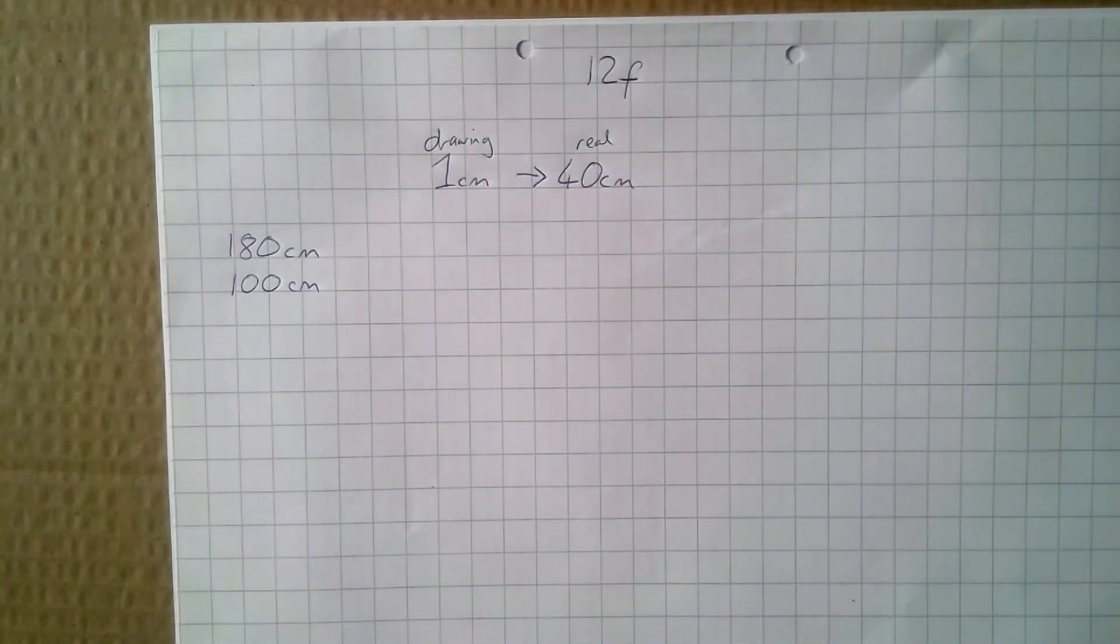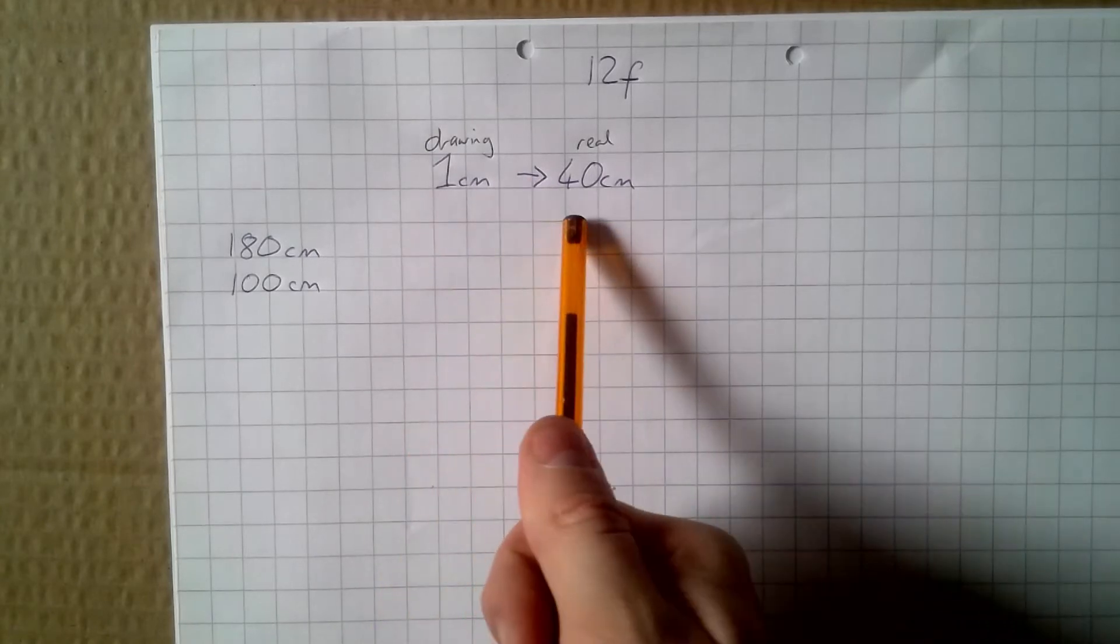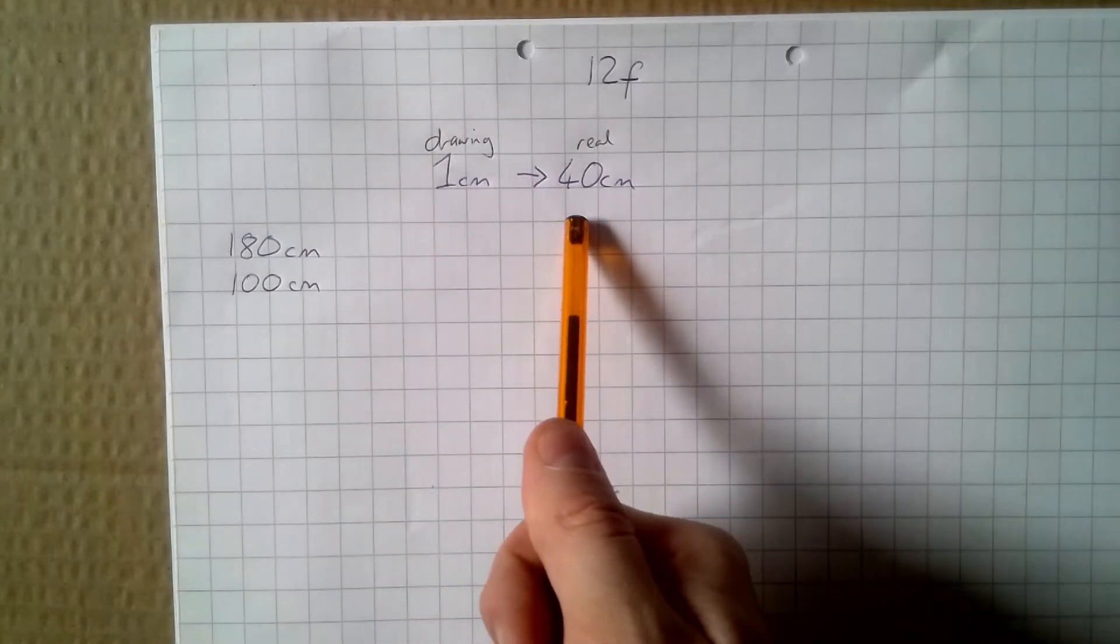So if I draw five centimeters, that becomes 40 times five, which is 200 centimeters or two meters.